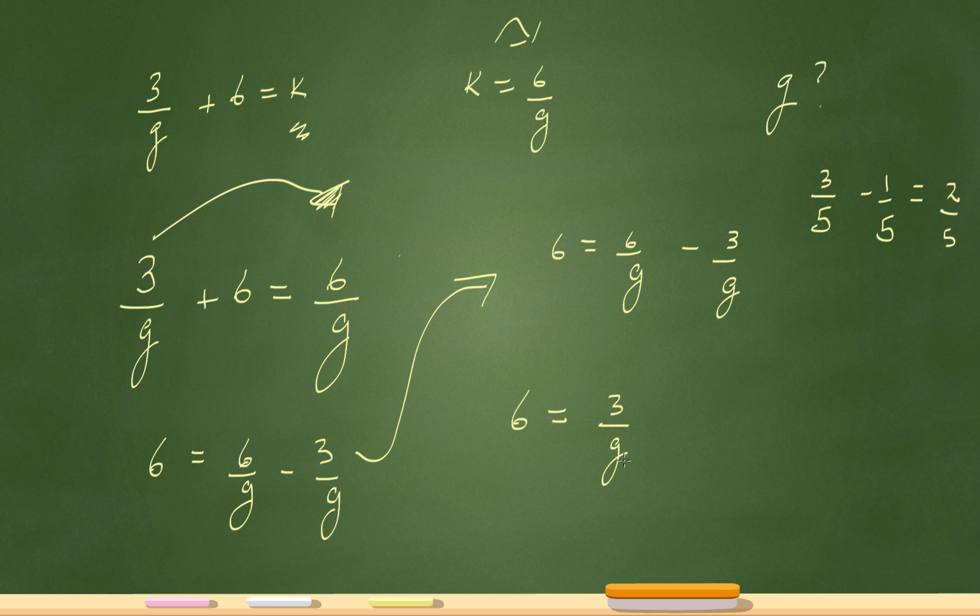Now let's multiply both sides by g. This side by g and this side by g. So this g cancels that g out, and over here I'll have 6g equals 3. And to solve for g, I'll just divide both sides by 6. g will equal 3 over 6, or 1 half.